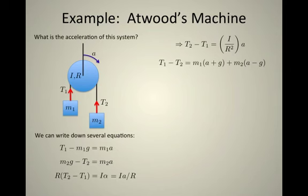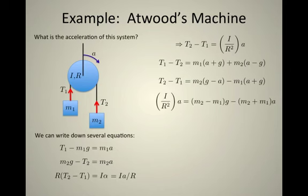Well, T1 minus T2, if I add the previous two equations together, equals m1(a+g) plus m2(a-g). That means that T2 minus T1 is m2(g-a) minus m1(a+g). And I can set these two things equal. That is, I'm setting this equation equal to that equation.